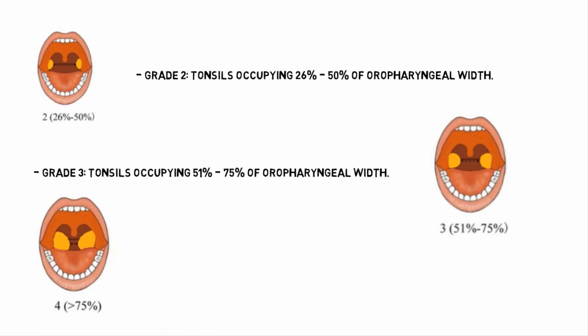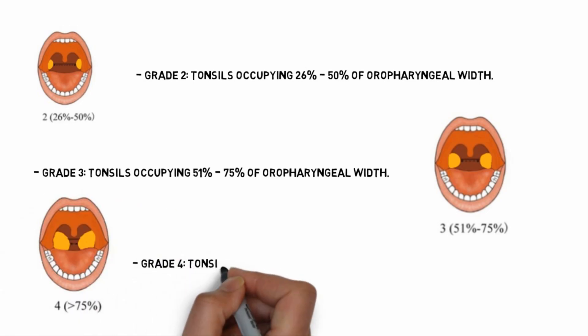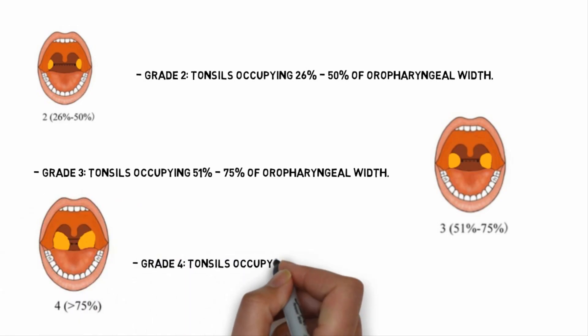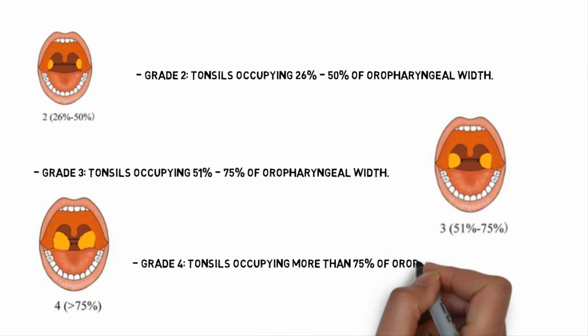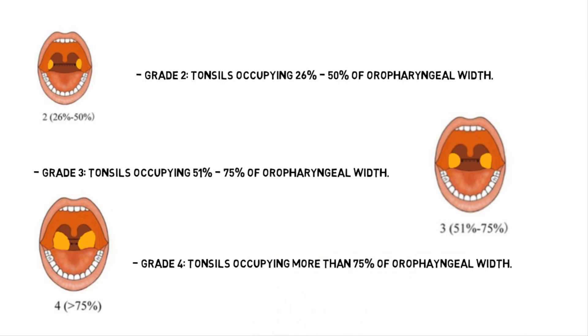The final grade is grade 4, in which tonsils occupy more than 75% of oropharyngeal width, which is an emergency. They are severely enlarged and obstruct the airway, which can cause substantial breathing difficulties, pain, and dysphagia. Grade 4 is an emergency condition.